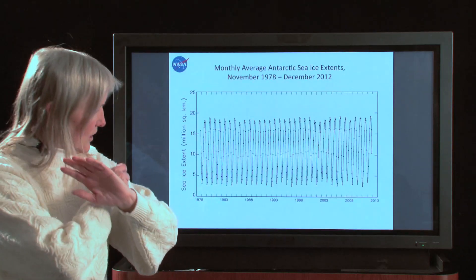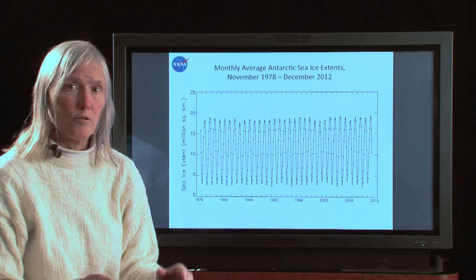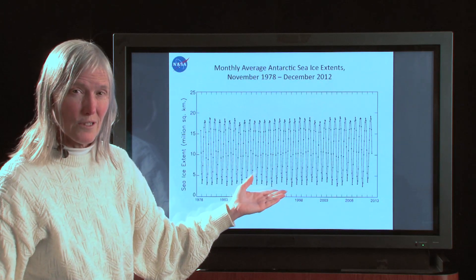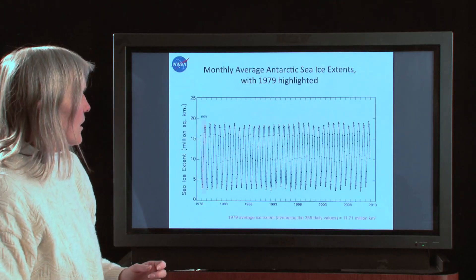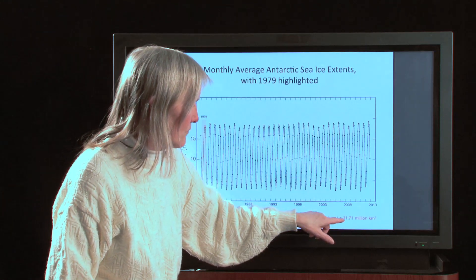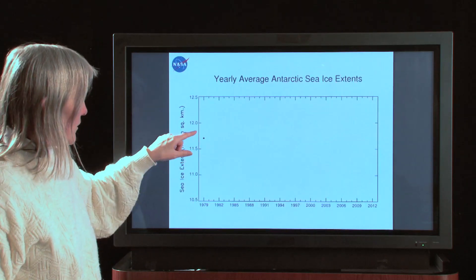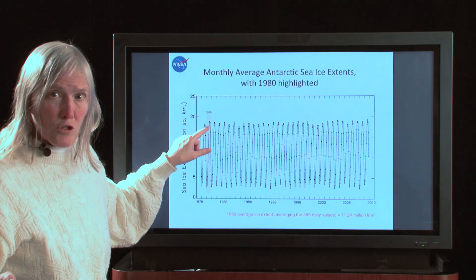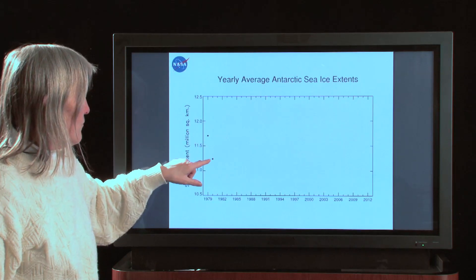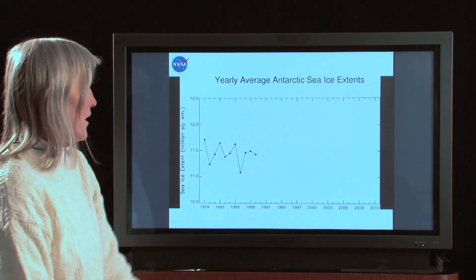So we then do the exact same thing with the Antarctic. We start with our plot of monthly averages, and then to get rid of that seasonal cycle — which is clearly confusing the issues, because if you look at this you can't really be sure whether it's increasing or decreasing over time, since it's not as obvious as the Arctic case. So we take the values for 1979, we average them using the daily values, and we get 11.71 million square kilometers for that first year. We plot that point at 11.71. Then we move on to 1980, and this time we get 11.24, and plot that yearly average. Then we keep doing that, and have the computer plot all the values for each of the years.